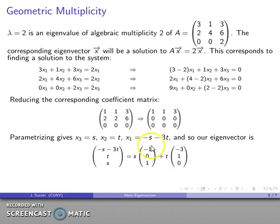I have two parameters, so I'll split that into two actual eigenvectors, negative 1, 0, 1, negative 3, 1, 0.